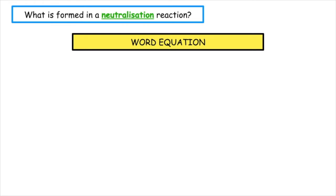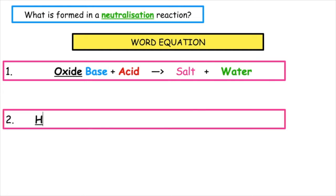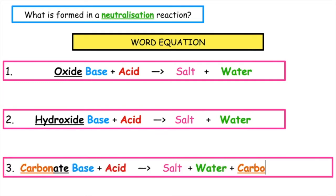From the previous video, we looked at the three different word equations that we have to know. We've got an oxide base, a hydroxide base, and a carbonate base. When they react with acids, they will always produce salt plus water. But the carbonate base also produces a third product, which is our carbon dioxide gas.